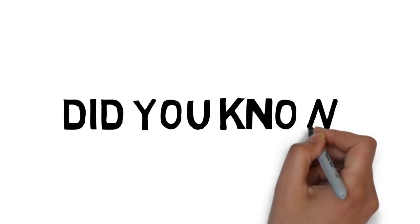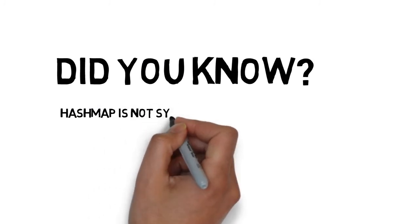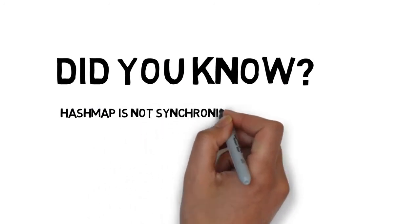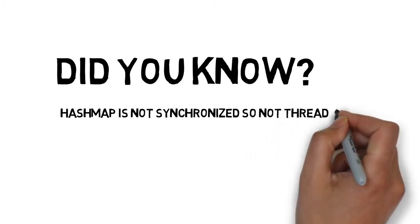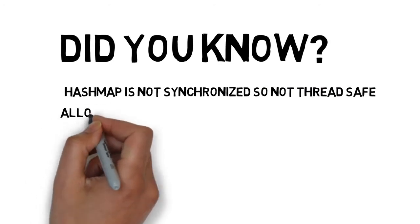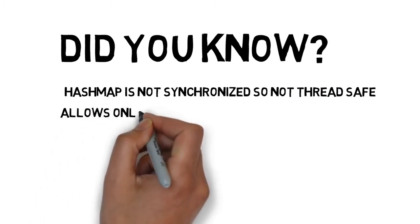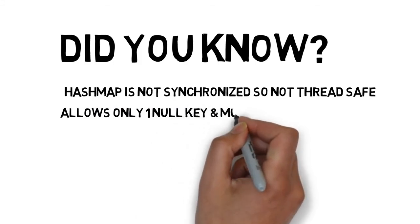Did you know? Hash map is not synchronized, so not thread safe. Hash map allows one null key and multiple null values.